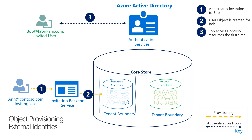Bob also could have gone straight to the resource if he knew the link to it. This works for any other application the same way. In step four, the authentication does the home realm discovery. The user needs to type in the UPN — in this case, Bob is going to type bob@fabricam.com. Now we have two pieces of data: we know that the resource is in Contoso, and the user account is in Fabricam. Since both of these are recognized by the authentication service as Azure AD tenants, the authentication systems can validate if there is a user in Contoso that represents Bob. In this case, there's a user, but it's in pending state per step two.